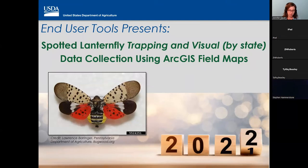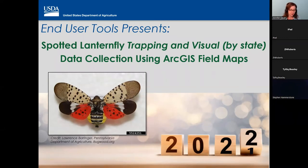There are two maps for visual surveys: this one, visual by state, and also a nationwide visual data collection map. The nationwide visual is used where there is no known presence, and that should be recording negatives only. This state visual map is used to record where there is a known SLF presence. That being said, that's about as deep as I go into survey protocol.